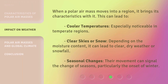When a polar air mass moves into a region, it brings its characteristics with it. This can lead to cooler temperatures, especially noticeable in temperate regions; clear skies or snow depending on the moisture content — it can lead to clear dry weather or snowfall; and seasonal changes — their movement can signal the change of seasons, particularly the onset of winter.